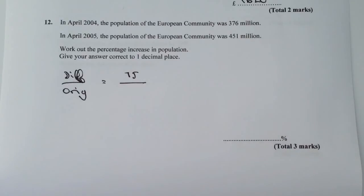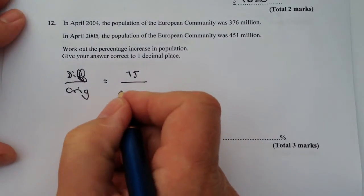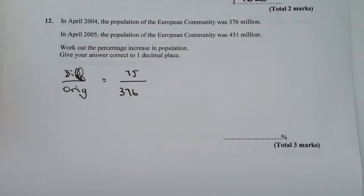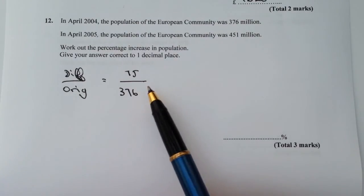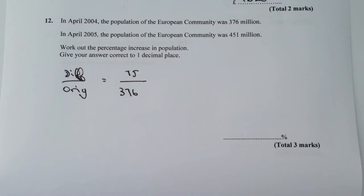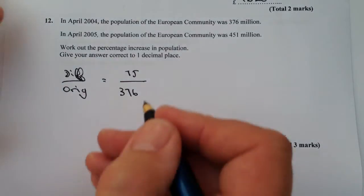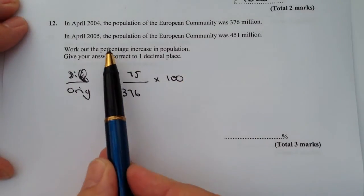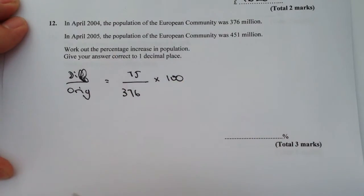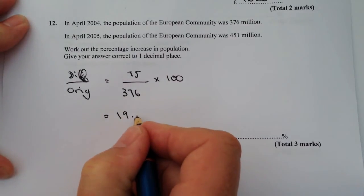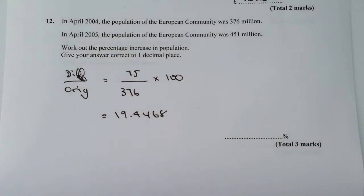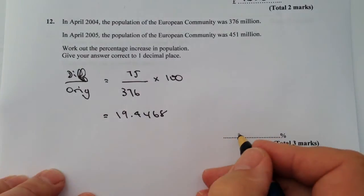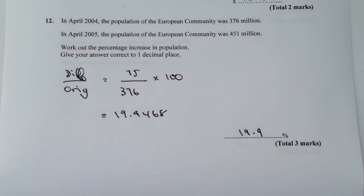The original was 376 million — I'll just write 376 because it's exactly the same fraction with the same number of zeros top and bottom. Multiplied by 100 because we're looking for a percentage. The question says give your answer correct to one decimal place. If I calculate that, it comes out at 19.9468, so to one decimal place that's 19.9%.